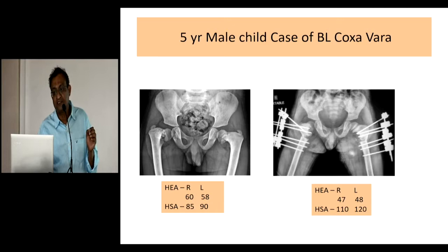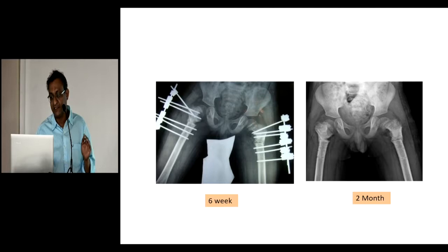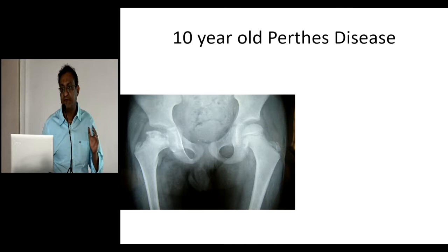Another advantage is that for children with bilateral coxa vara, open surgery with plating would require two separate sittings due to blood loss. External fixator being a percutaneous surgery allows you to do bilateral surgery at the same sitting. This child corrected very well after the procedure.